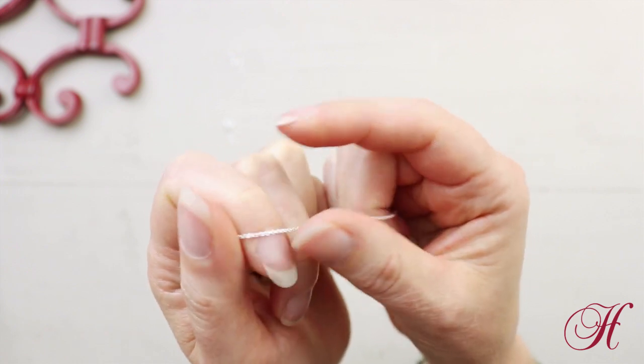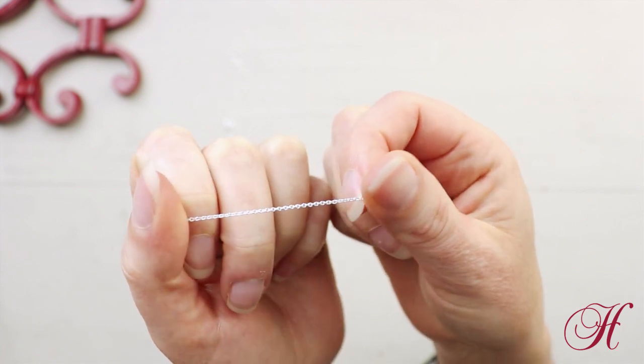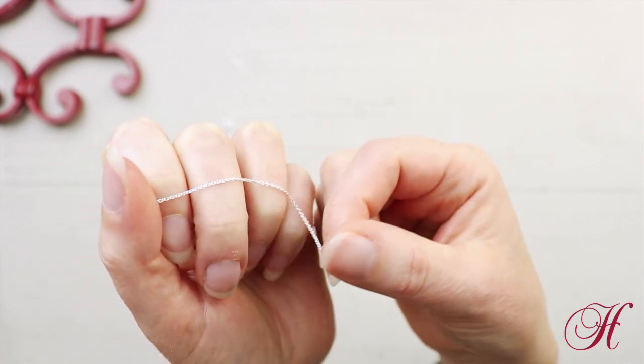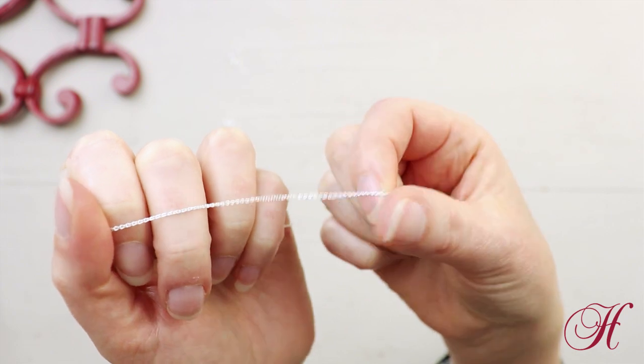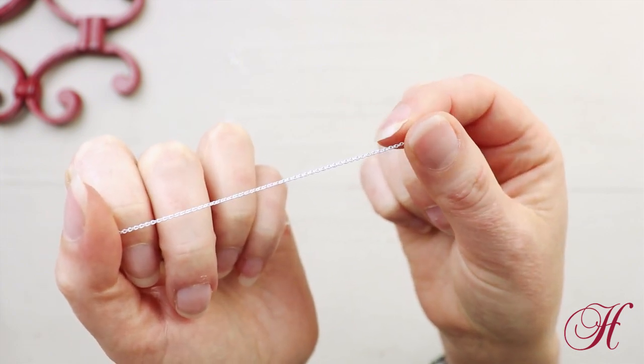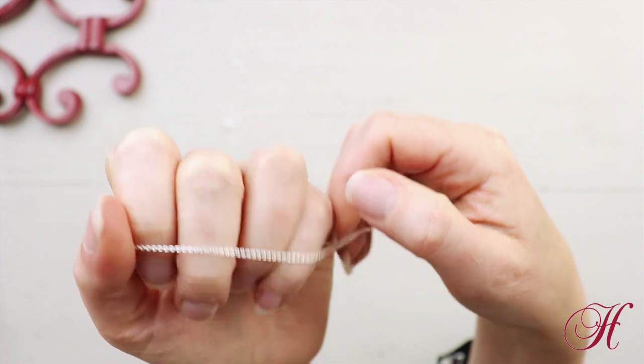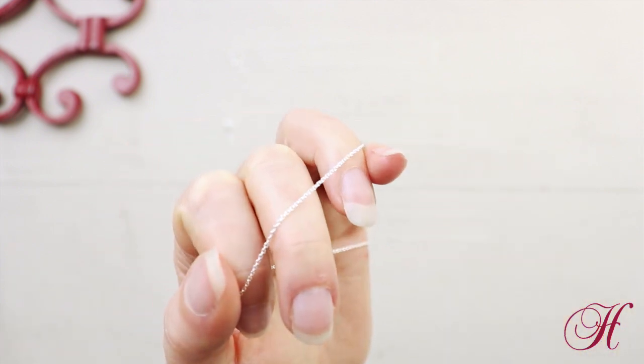Instead you'll want to slip a closed jump ring over this chain for your charms or pendants. However, it almost looks like a rope because the links are so tightly woven. It's a beautiful delicate fine sterling silver chain.